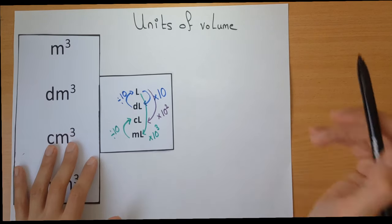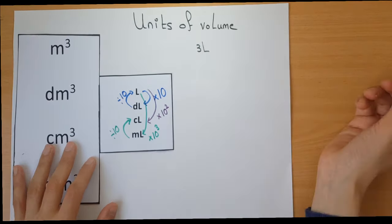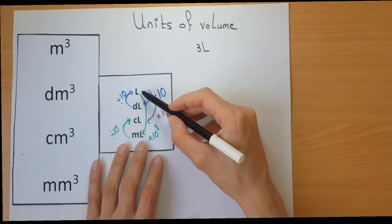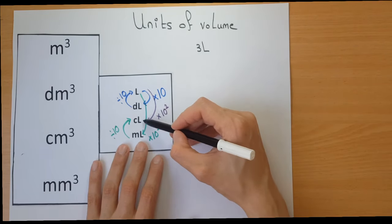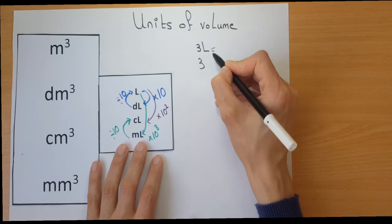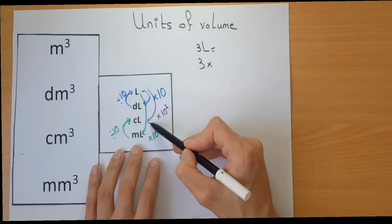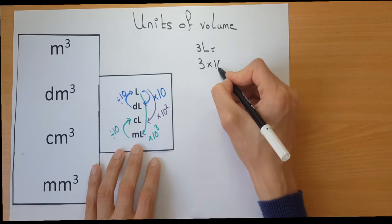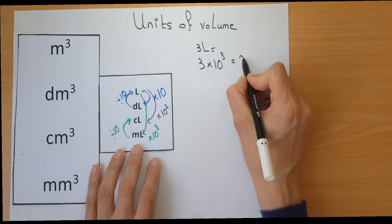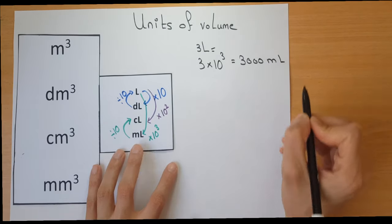Let's take an example. If I want to convert from litres to millilitres, because I'm going down, I multiply. How many steps? Three steps, each step times 10, so this is times 10 to the power of 3. So we have 3,000 millilitres.